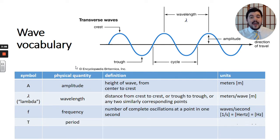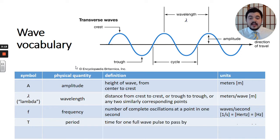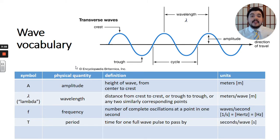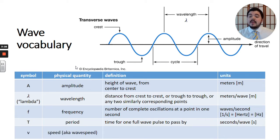We also have the quantity period, whose symbol is capital T. This is the time for one full wave pulse to pass by, and because it's an amount of time its units are seconds — or in particular, seconds per wave.